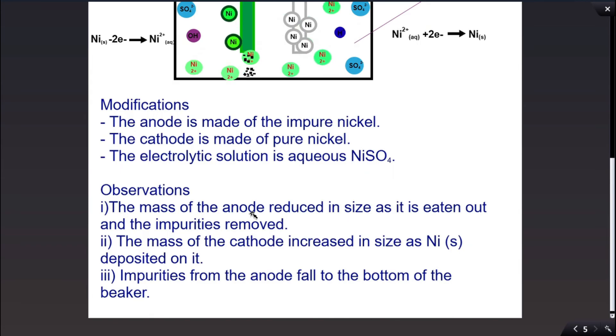So what are the observations? I've given a few. The mass of the anode is reduced in size as it is eaten out and impurities removed. The mass of the cathode increases in size as the nickel solid deposits on it. The impurities from the anode fall to the bottom of the beaker.